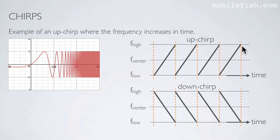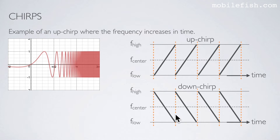This is the up chirp. The down chirp is the inverse of the up chirp. It starts with its highest frequency and the frequency decreases with time. When the lowest frequency is reached, it jumps back to its highest frequency and the process starts all over again.